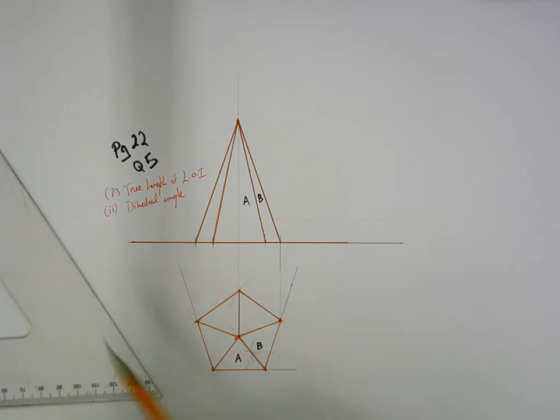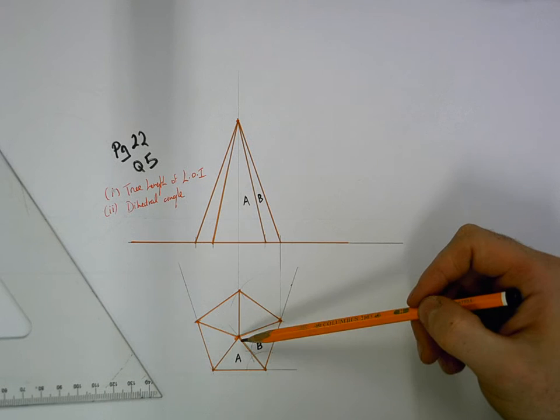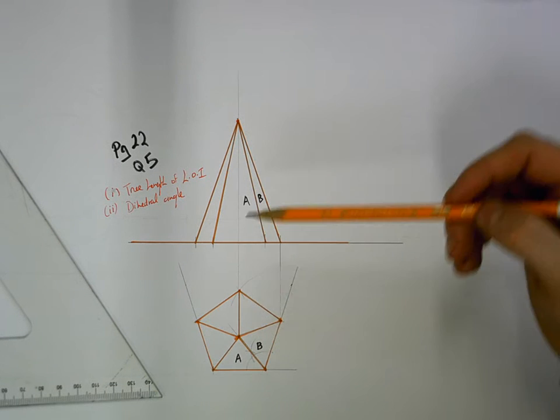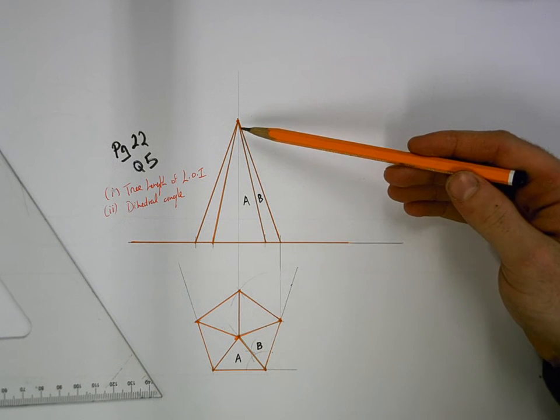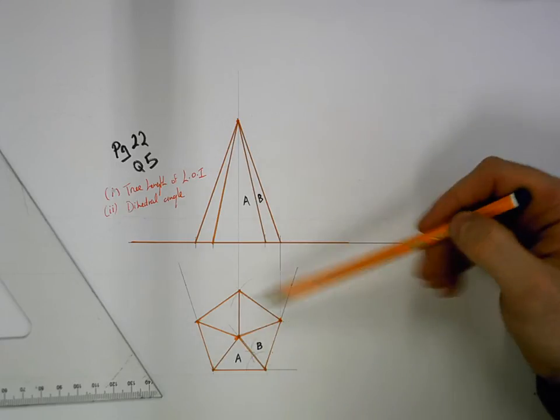Right, so this is page 22 question 5. You're given this pentagon based pyramid with a height of 70, 5 equal sides all a length of 30.